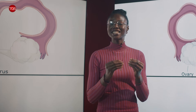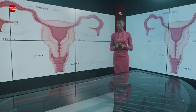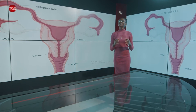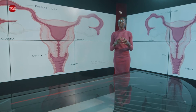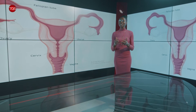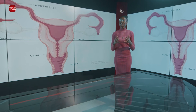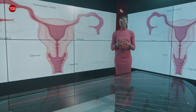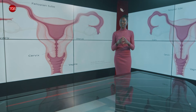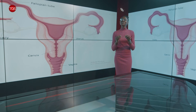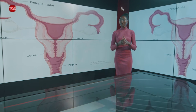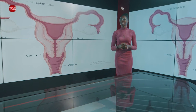The female reproductive organ also facilitates labor and childbirth. It consists of the vulva, vagina, uterus, fallopian tube, and the ovaries. All these special parts of the woman's reproductive organs ensure a quality reproductive and sexual well-being of a woman.